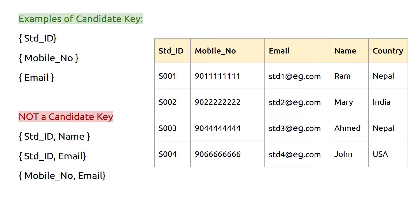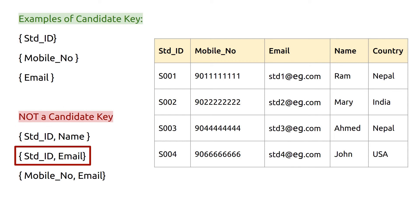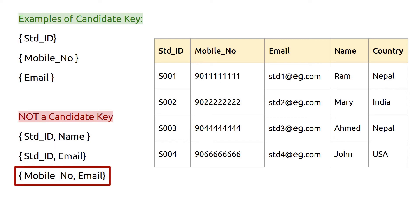In this table, student ID, mobile number, and email are candidate keys because they are unique and can each identify every record uniquely. What is not a candidate key? Student ID and name is not a candidate key because name is an extra attribute. Similarly, student ID and email is not a candidate key because only one of those — either student ID or email — is enough. The same applies to mobile number and email together.